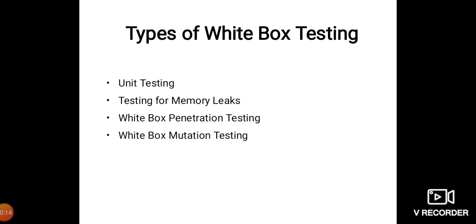The types of white box testing: white box testing encompasses several testing types used to evaluate the usability of an application, block of code, or specific software package. The first type is unit testing. It is often the first type of testing done on an application. Unit testing is performed on each unit or block of code as it is developed. It is essentially done by the programmer — as a software developer, you develop a few lines of code, a single function, or an object and test it to make sure it works. Unit testing helps identify the majority of bugs early in the software development cycle, and bugs identified at this stage are cheaper and easier to fix.